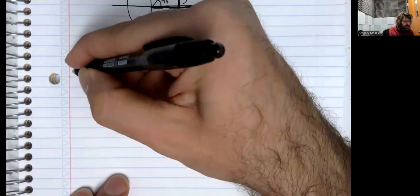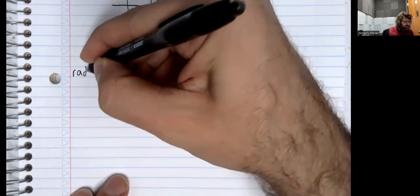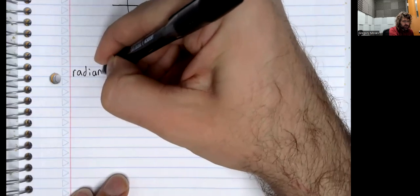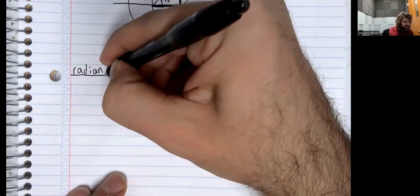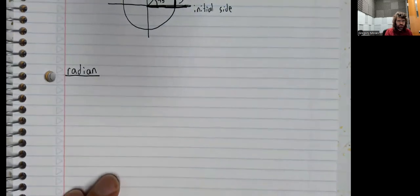We'll now define an alternative to the degree called the radian.